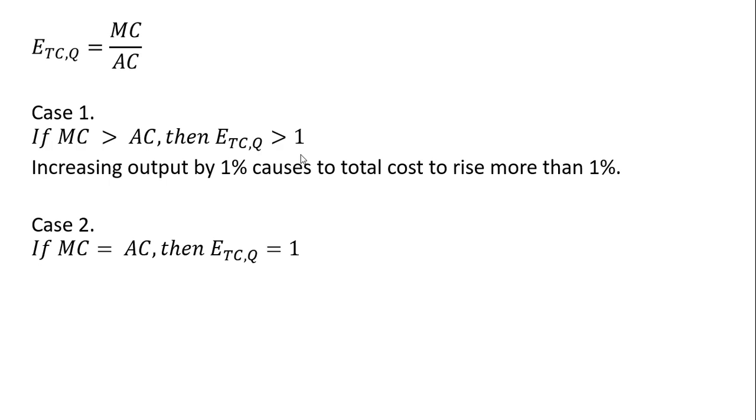Case 2, if marginal cost equals average cost, then the cost output elasticity is exactly 1. So increasing output by 1% causes total cost to rise by 1%.